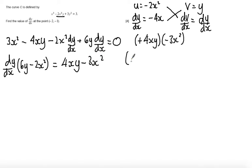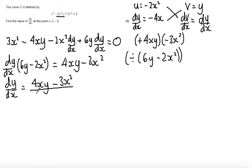So now to get dy by dx, I'm going to divide by 6y minus 2x squared. So this leaves me with dy by dx is equal to 4xy minus 3x squared all over 6y minus 2x squared.